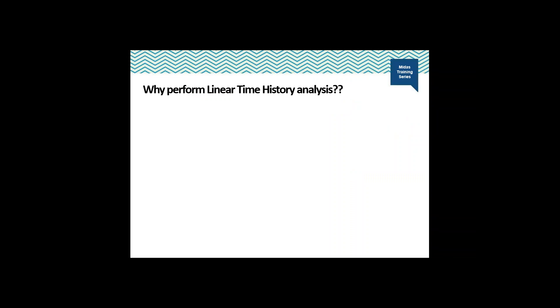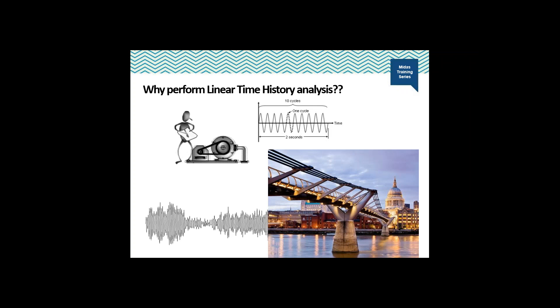If the inertia and damping effects are important, then such structures need to be studied for the effect of dynamic loads. Examples include a machine mounted on a frame structure or a pedestrian bridge. In such structures, if the frequency of vibration is closer to the natural frequency of the structure, resonance may happen, leading to heavy damage. The effect of explosion near structures could also be studied with the linear time history method.